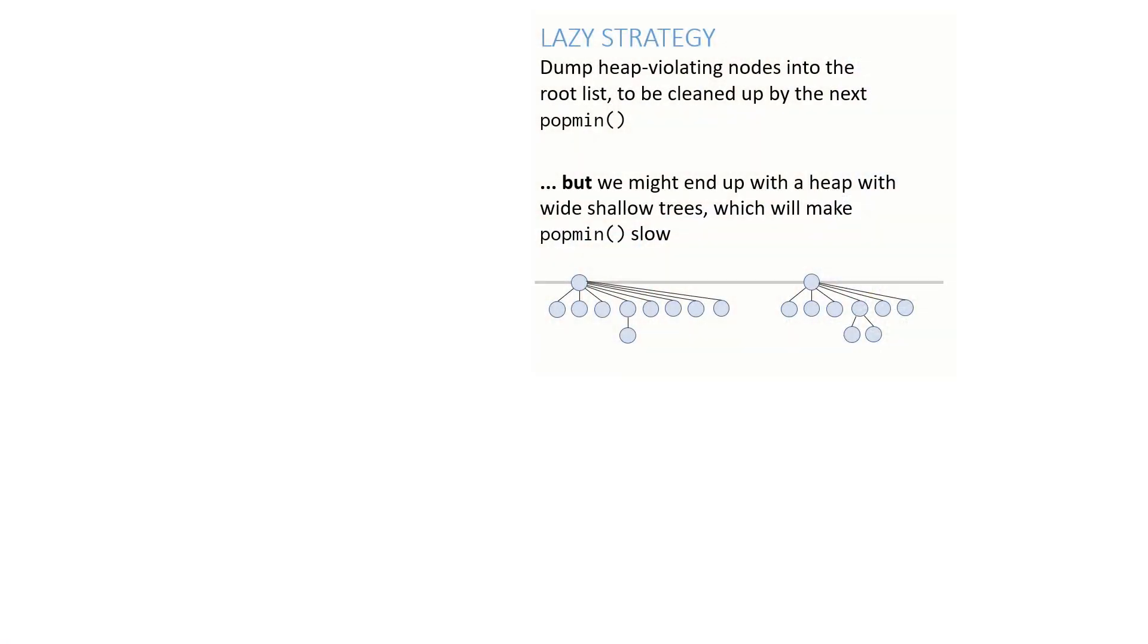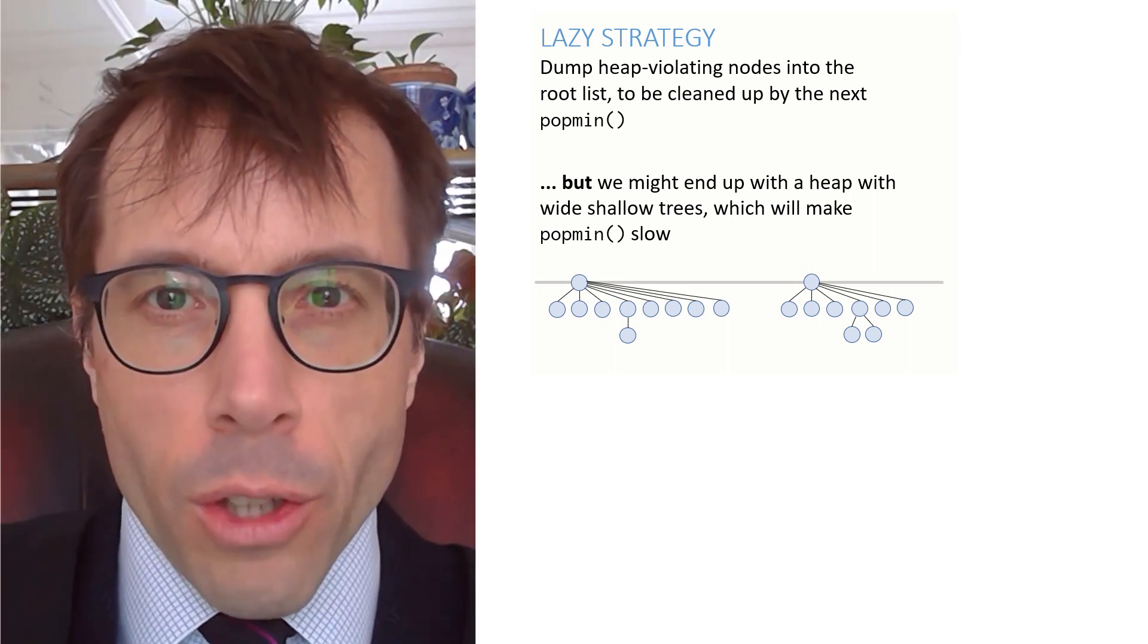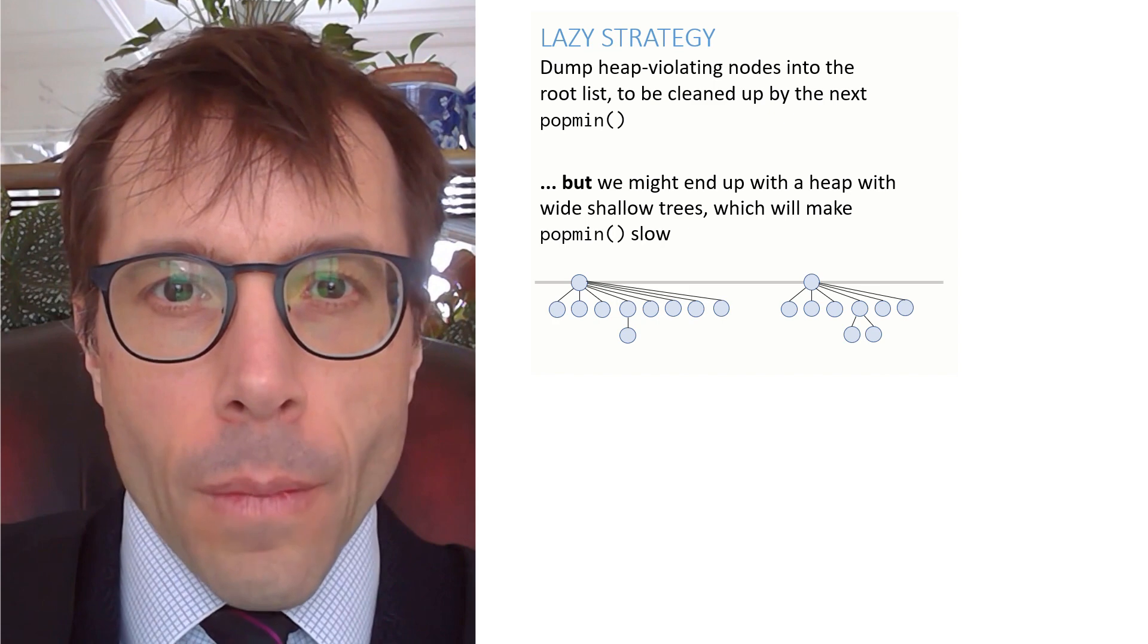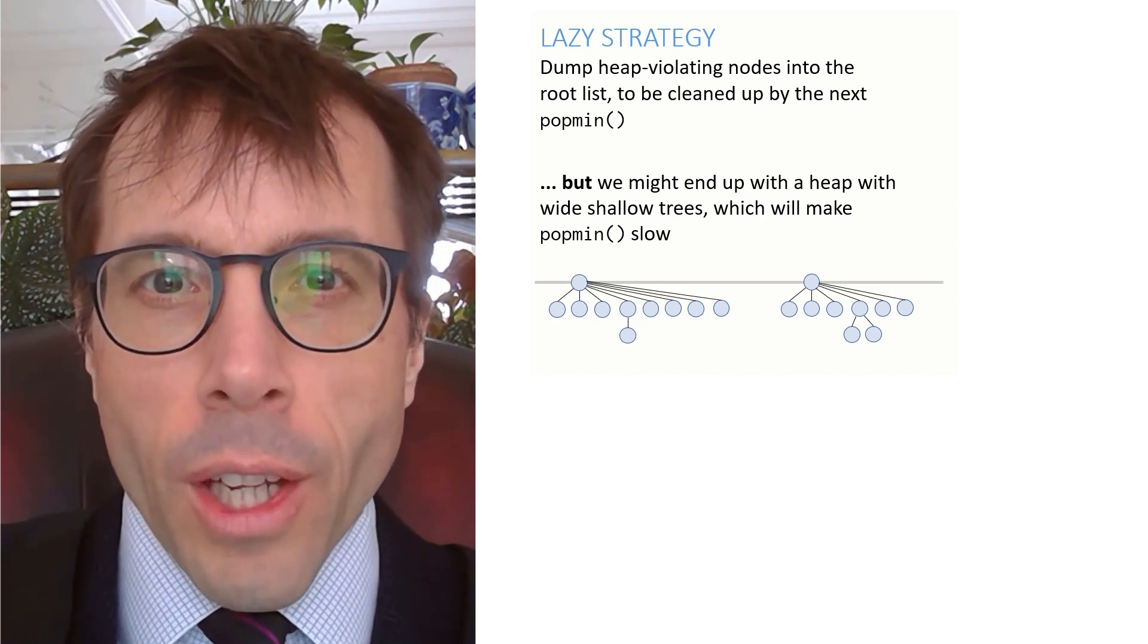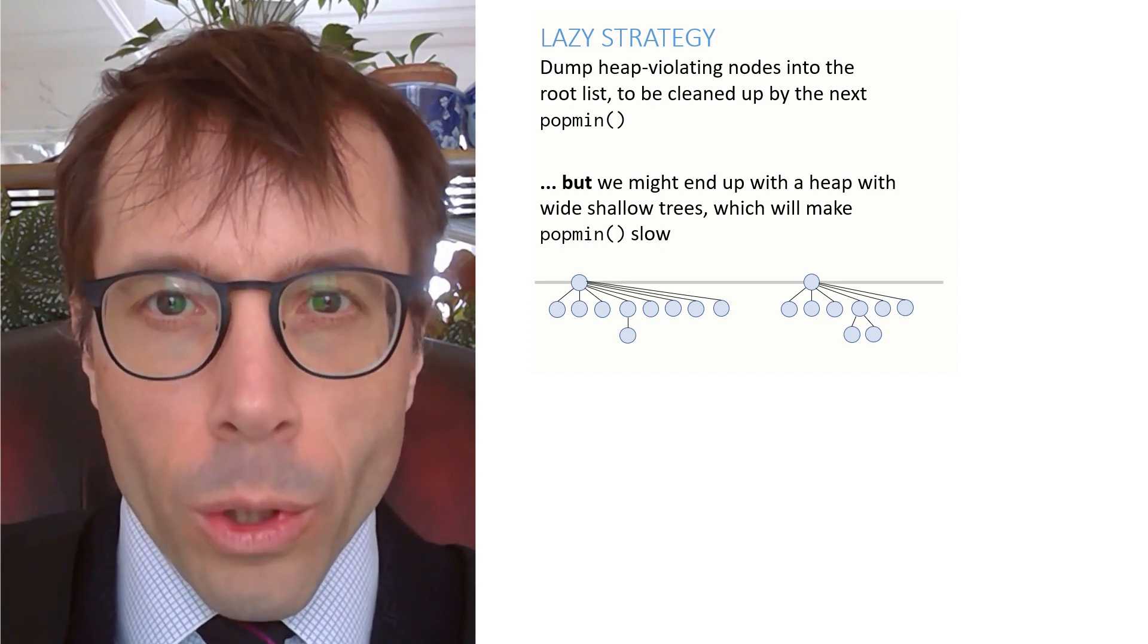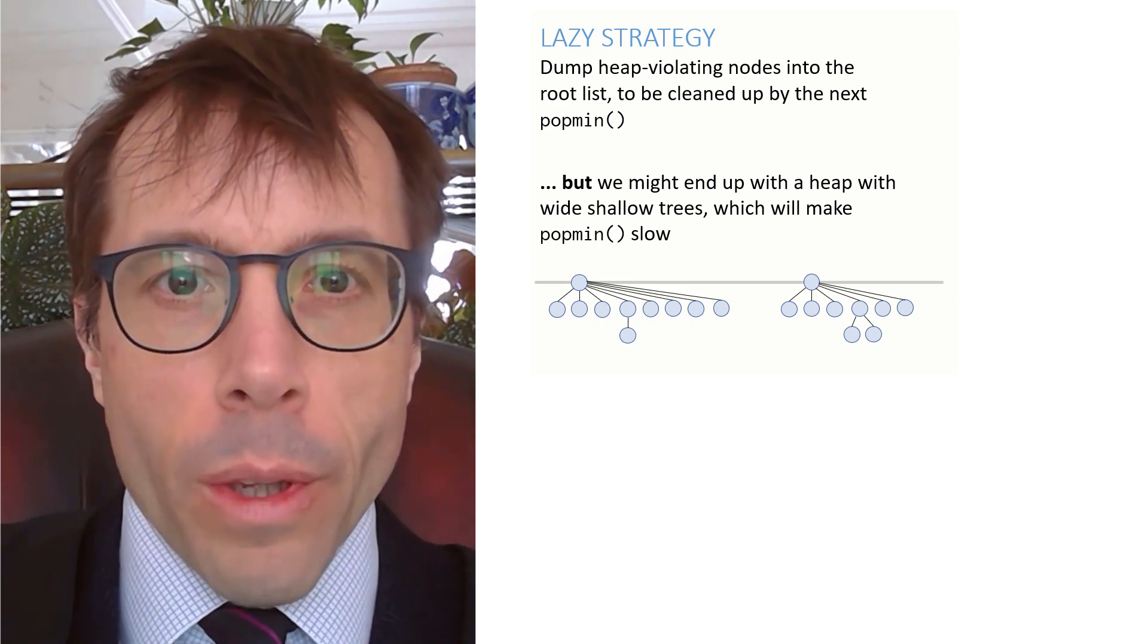But there's a problem. The problem isn't having lots of nodes just dumped into the root list, because we know that we can heapify a batch of things efficiently. The problem is that if we do too much of this lazy dump heap violating nodes into the root, then we might end up with this sort of wide and shallow tree, and this sort of tree turns out to be a problem. Now, this here, this is the real genius of the Fibonacci heap design, realizing that wide, shallow trees will cause a problem and finding a way to deal with it.